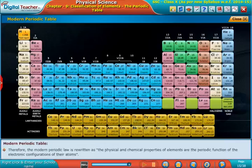Therefore, the modern periodic law is rewritten as: the physical and chemical properties of elements are the periodic function of the electronic configurations of their atoms.